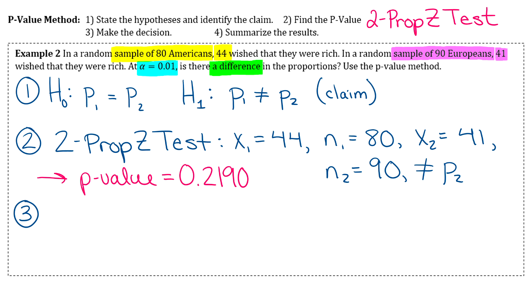Step 3 and 4, we're definitely pros at these steps by now. Since 0.2190 is greater than 0.01, we do not reject the null hypothesis, which means that there is not enough evidence to support the claim.